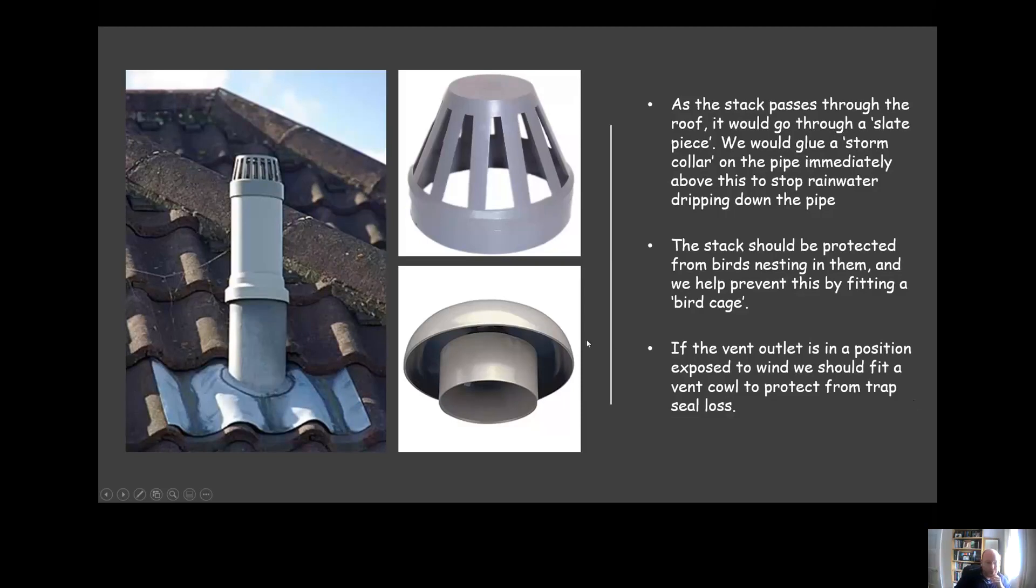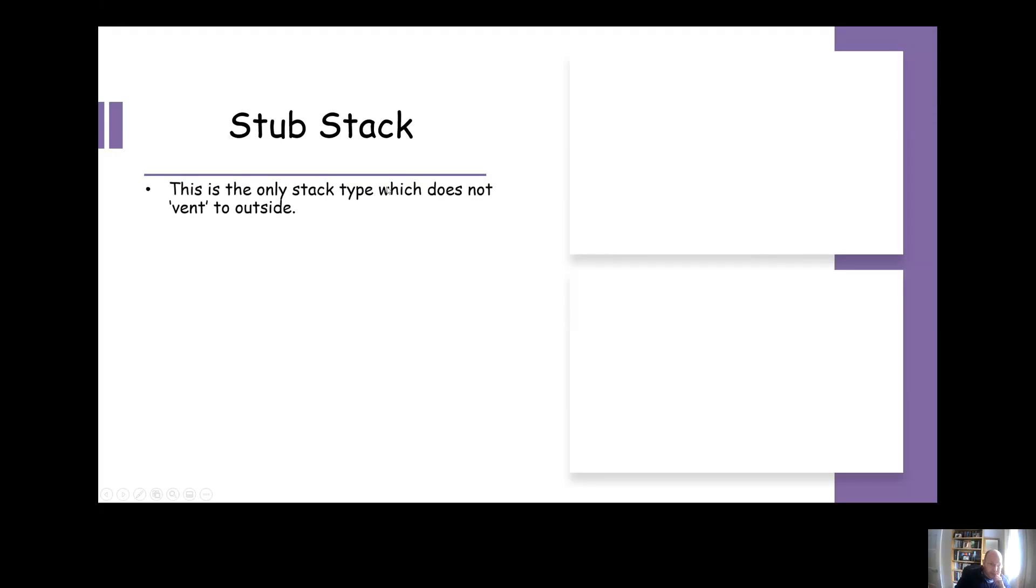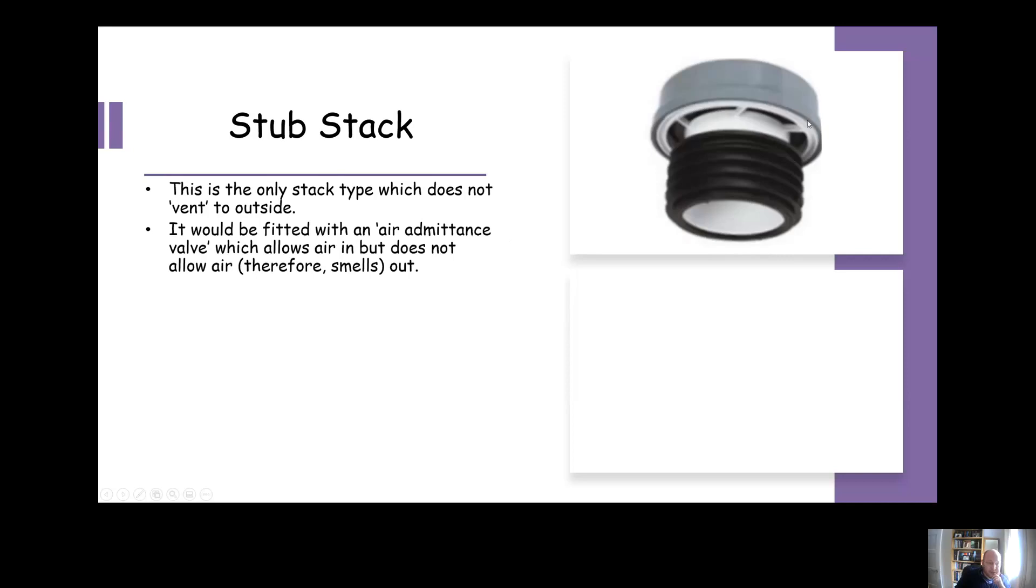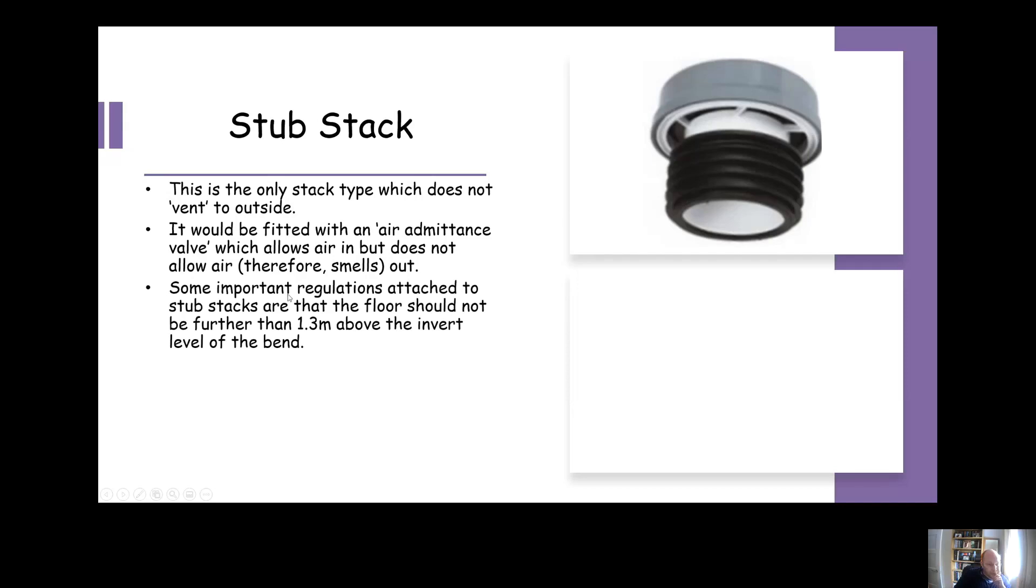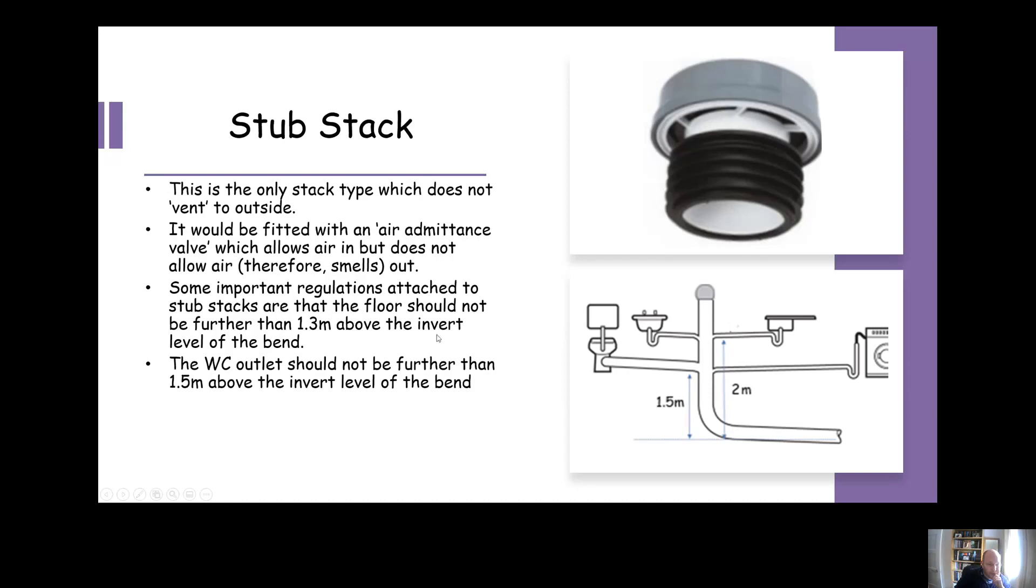Stub stacks. It's the only type of stack that we're going to look at which doesn't vent to the outside. We have an air admittance valve fitted on it that allows air in but it doesn't allow air out. Some of the key regulations: the floor level, if you fit a stub stack, it should be no more than 1.3 meters from the invert level of the bend. And to the center of the WC, where the WC outlet is, that should be no more than 1.5 meters from the invert level of the bend. So the base of the stack, essentially the highest connection that we can make to a stub stack, should be no more than two meters from the base of the stack, from the invert level of the bend.